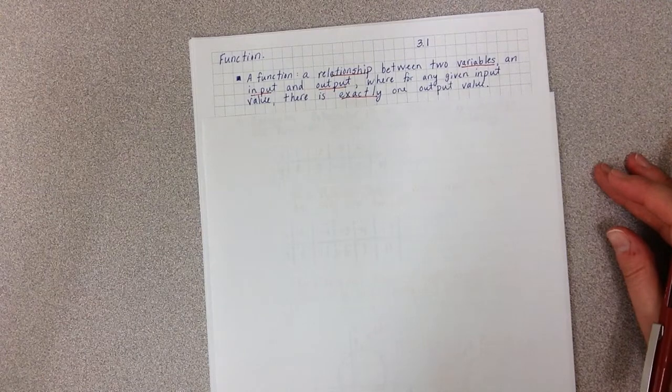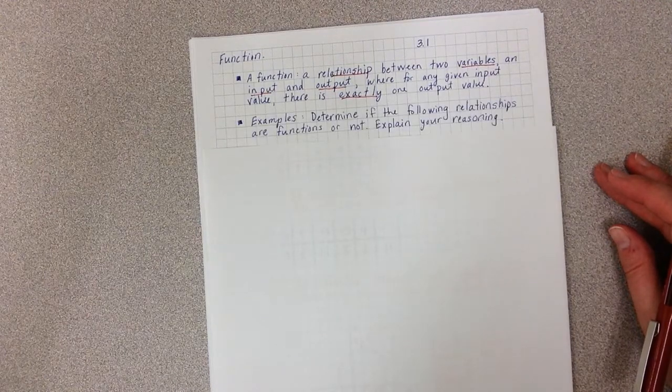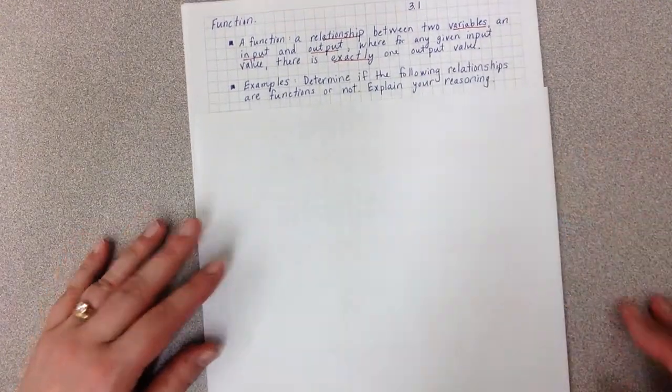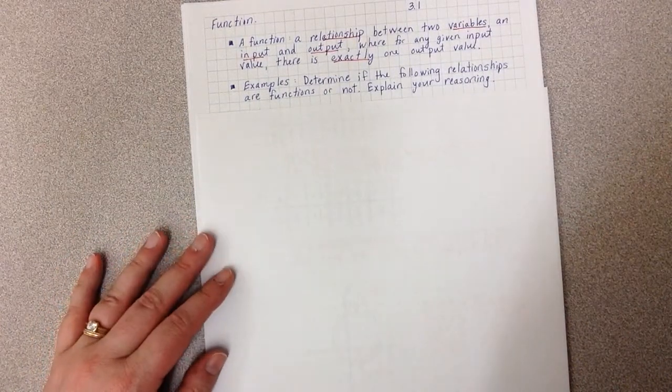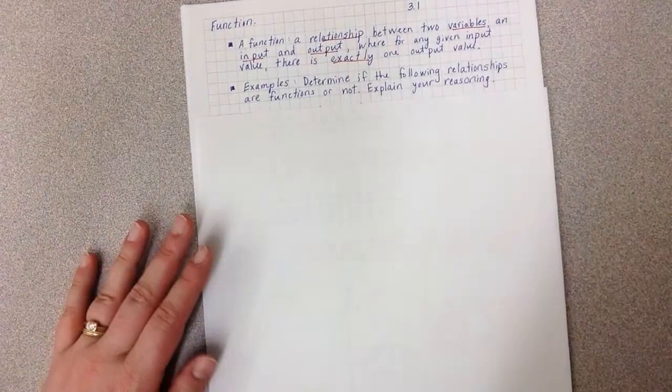So let's look at a few examples. We're going to determine if the following relationships are functions or not, and we'll explain our reasoning.